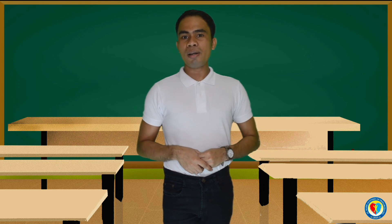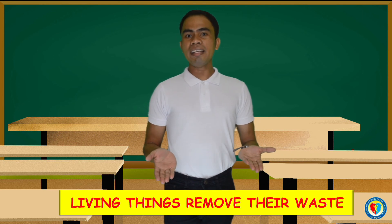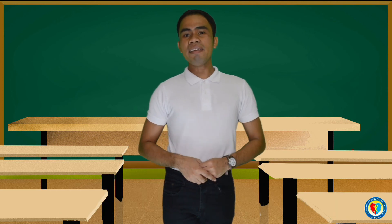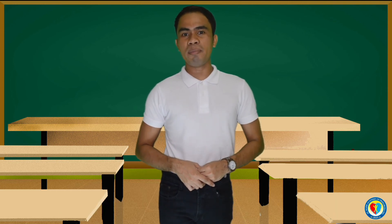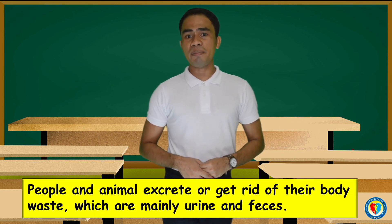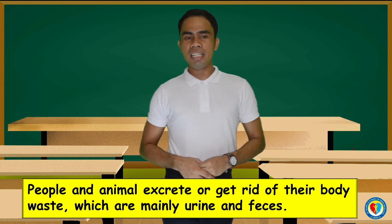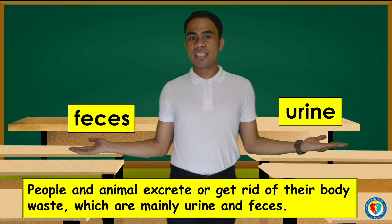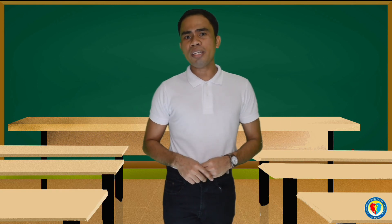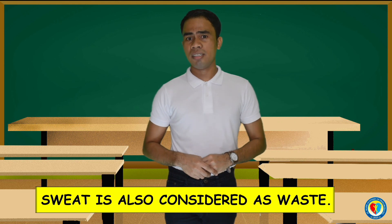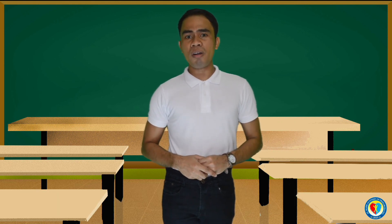And lastly, let's talk about living things removing their waste. Living things remove waste from their body. People and animals excrete or get rid of body waste, which are mainly urine and feces. Did you know that the sweat of people is also considered as waste? On the other hand, plants give off oxygen as their waste.